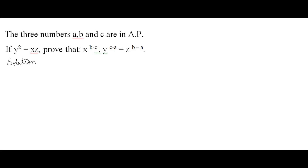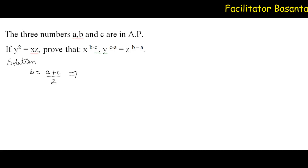The three numbers A, B and C are in AP. It means that B is equal to A plus C divided by 2, or this can be written as C is equal to 2B minus A.